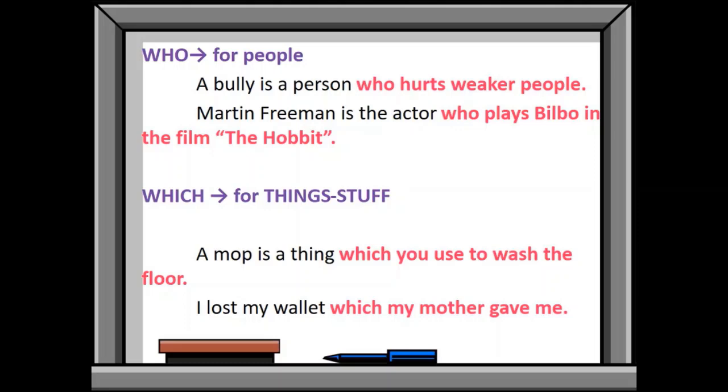Now, where we can use them. These relative pronouns can be used: who is used when we are talking about the people. And when we are going to give information about things, we will be using which. Martin Freeman is an actor who plays Bilbo in the film. Here we are talking about the person. That's why we used who. I lost my wallet which my mother gave me. Here wallet is a thing, so we use relative pronoun which.